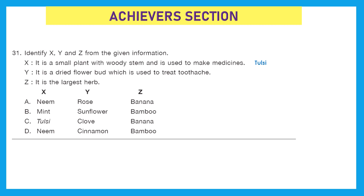For Z — it is the largest herb. Between banana and bamboo, the answer is banana, because bamboo is not a herb. Banana is the largest herb — that may be new information for many of you! So the option correctly listing Tulsi for X, Clove for Y, and Banana for Z is option C.